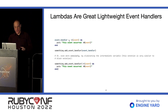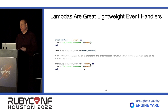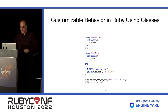Lambdas are great, lightweight event handlers. You can define a Lambda and put it in a variable and pass it, or just define it in place without assigning it to a variable. Check out the stabby Lambda notation and compare it with what passing a code block looks like — it's almost the same. The only difference is the parentheses and the arrow. Syntactically, it's really no big deal to use a Lambda instead of a block.